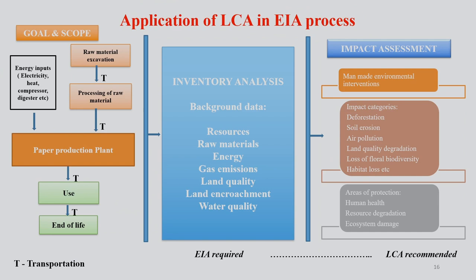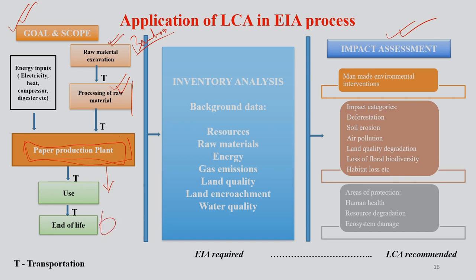Now we come to the application of LCA in the environment impact assessment process. Let us look at two aspects: one is goal and scope, and the other is impact assessment. When we talk about goal and scope, we start with raw material excavations — any kind of raw material, metallic, non-metallic, gas processing of raw material. If you consider paper, the raw material is bamboo. Then you process it, go for a paper production plant unit, produce paper, use it, and finally reach the end of the product's life. While doing so, we need energy in different forms and various other inputs.